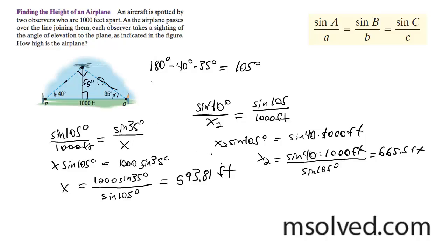Okay, so now that I have this, I can go ahead and do sine of 90 over 665 feet is equal to sine of 35 over x feet. It's getting kind of messy. All right, so what happens here is I get x because sine of 90 is 1, and I get 665 times sine of 35.